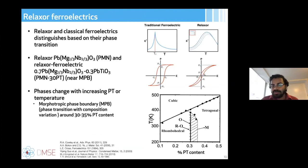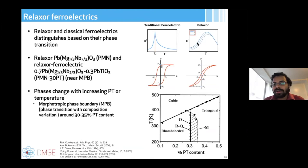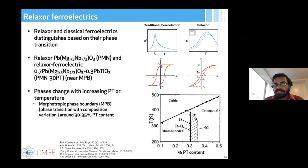Now I'll move to relaxer ferroelectrics. Relaxers can be distinguished from classical ferroelectrics by their phase transition: traditional ferroelectrics have a sharp phase transition at the Curie temperature, while relaxer ferroelectrics have a diffuse phase transition. The popular PMN system can be alloyed with lead titanate to form PMN-PT at different compositions. Traditional ferroelectrics have a broader PE loop while relaxer ferroelectrics have a slimmer PE loop, which offers advantages for energy storage devices.